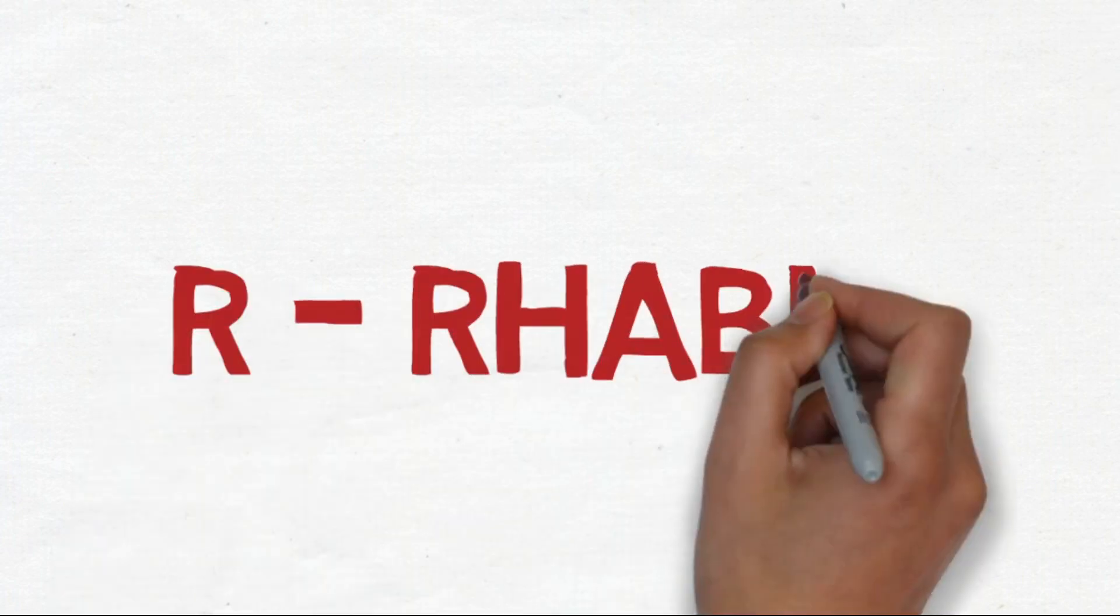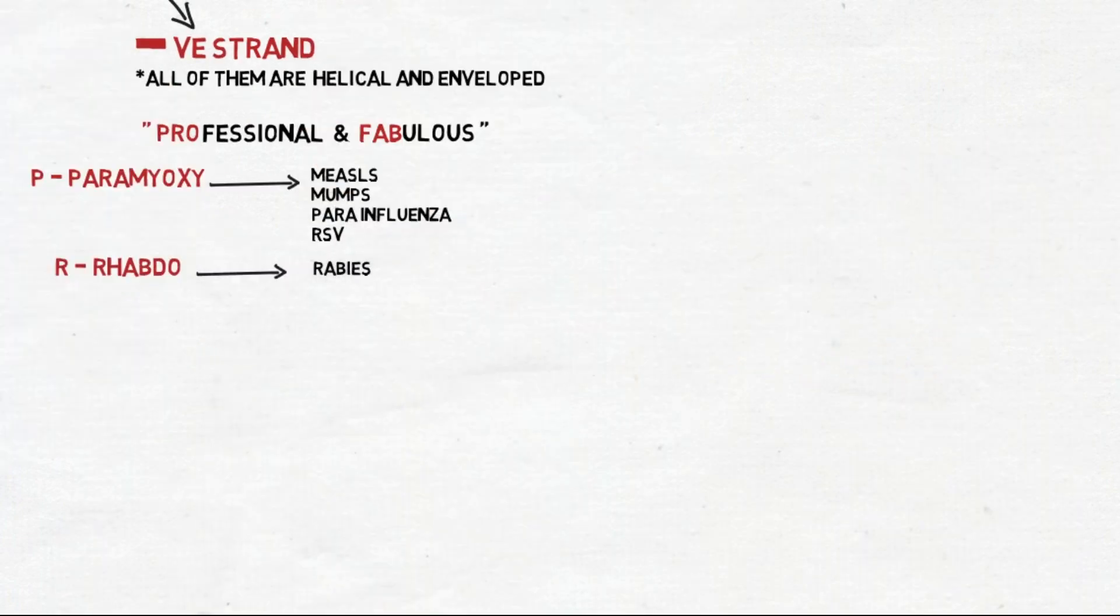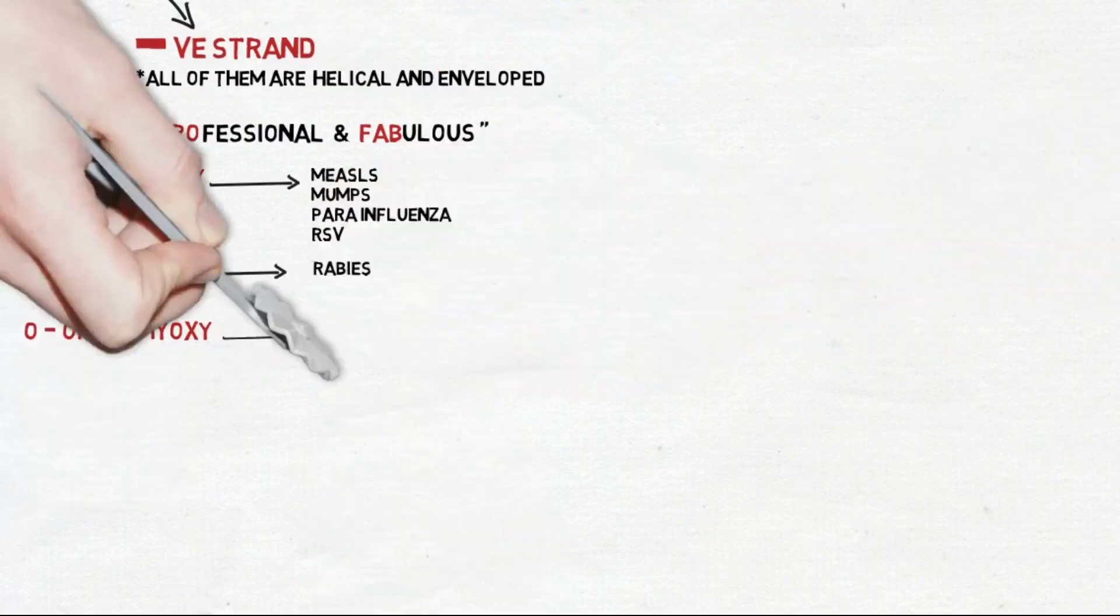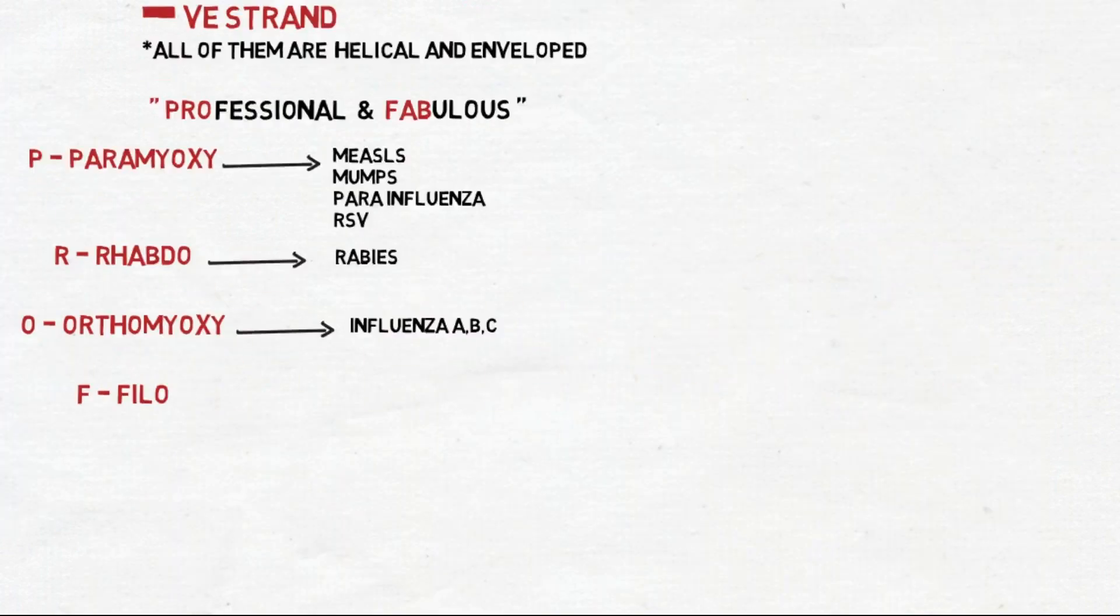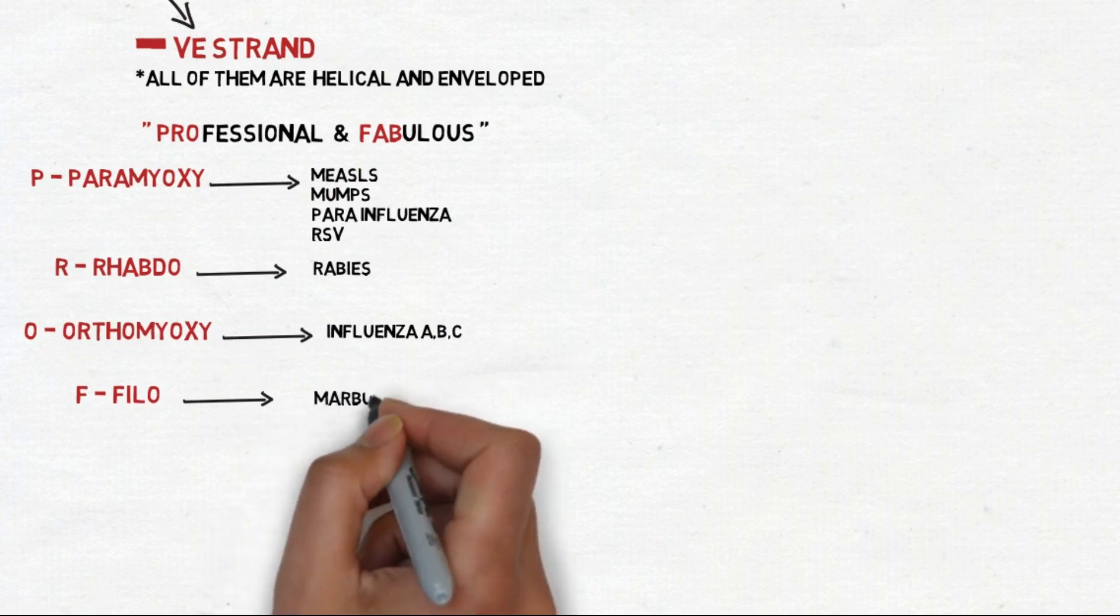R stands for Rhabdo, which includes rabies. O stands for Orthomyxovirus, which includes influenza A, B, and C. F stands for Filovirus, which includes Marburg and Ebola.